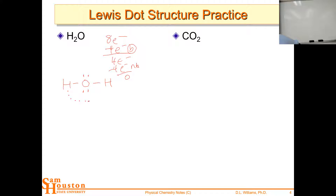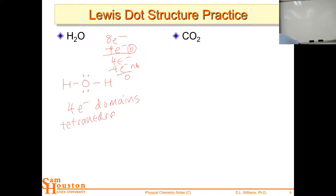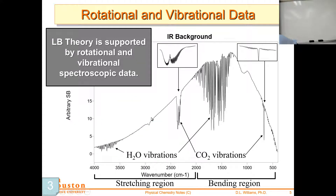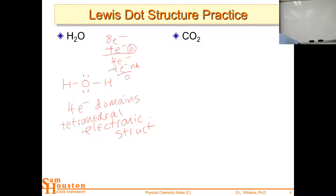We have four electron domains around oxygen, giving us a tetrahedral electronic structure. That produces a bent molecule.